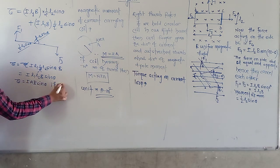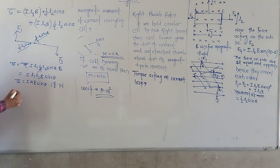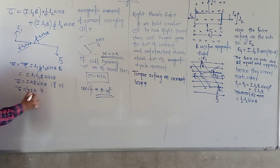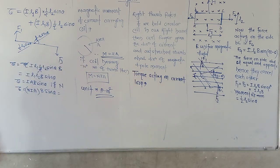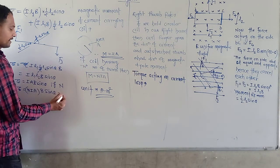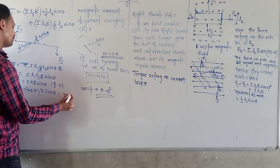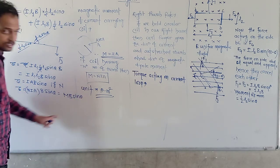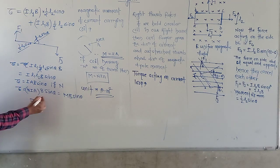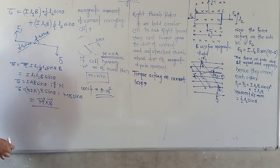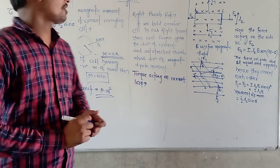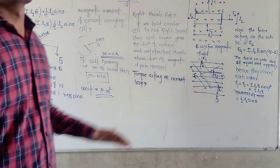If the coil has a number of turns N, then the total torque is τ equal to NIAB sin θ. Since NIA is the magnetic dipole moment M, we have τ equal to MB sin θ in scalar form. In vector form, this is written as τ equals M cross B. This is the required equation for torque acting on a current-carrying loop in a uniform magnetic field.